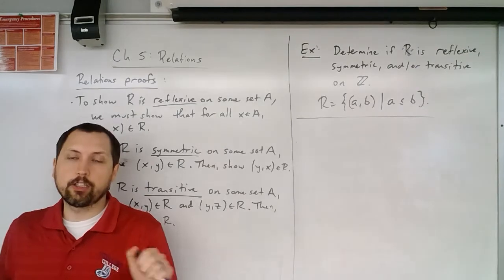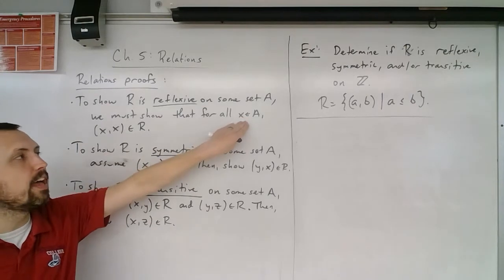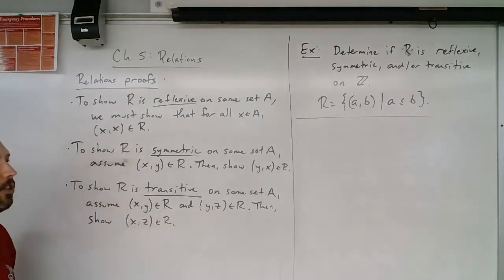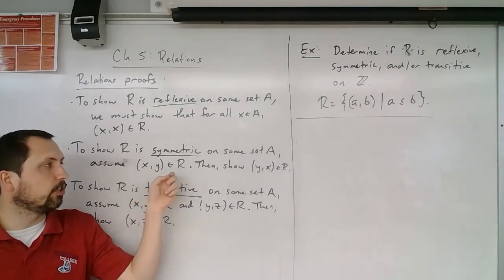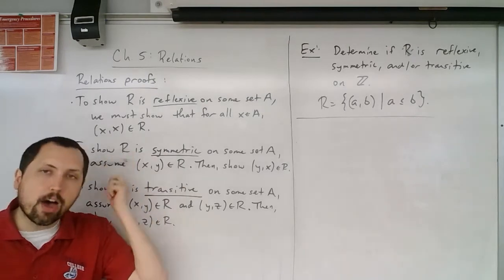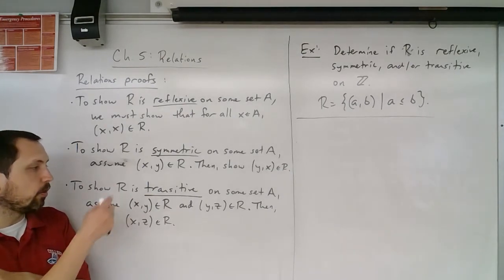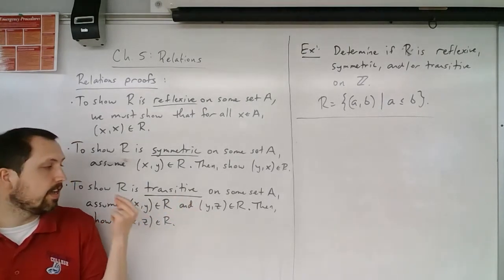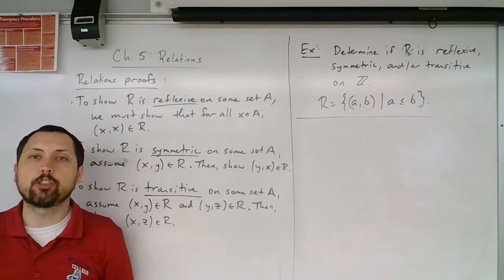To show that a property is not true, you look at its negation. To show R is not reflexive, there must exist some element x in A where (x, x) is not in R — an element not related to itself. To show R is not symmetric, assume (x, y) is in R but show that (y, x) is not. Similarly for not transitive: show there exist x, y, z where (x, y) and (y, z) are in R but (x, z) is not.